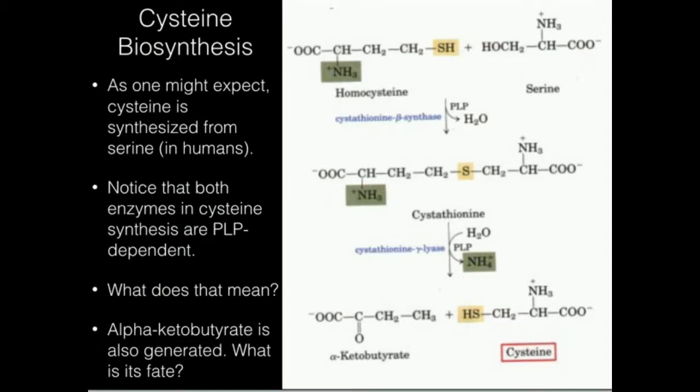Homocysteine is a precursor also to methionine. Homocysteine and serine are going to combine — condensed by a pyridoxal phosphate-dependent enzyme, cystathionine beta synthase — and give us the molecule cystathionine. Notice we get an elimination of water: this OH group is lost as water as we condense homocysteine and serine.